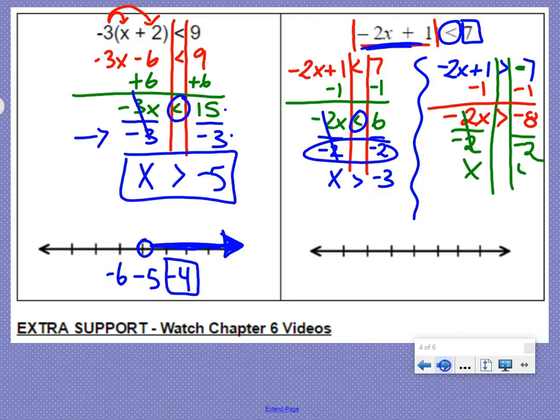We get x and 4. We divide it by a negative, which means we flip our inequality from greater than to less than.